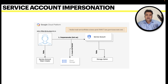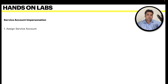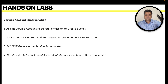We're going to see this in action. Understand that anyone can act on behalf of anyone, provided the right set of permissions. In today's lab: we'll assign the service account the required permissions to create a bucket, assign John Miller the required permission to impersonate and create a token, and strictly we are not going to generate any service account key. That's the whole point of this video — to show how you will work in any company.